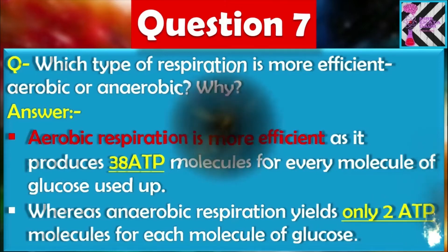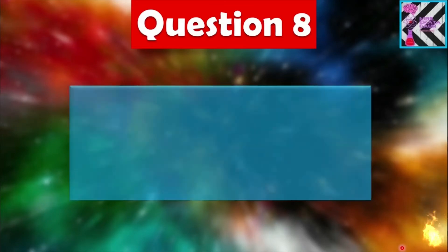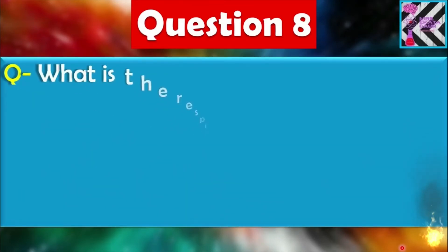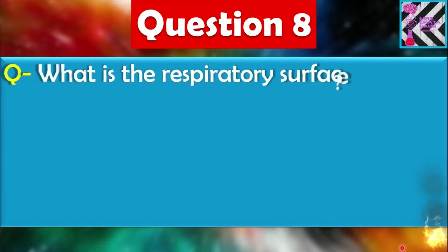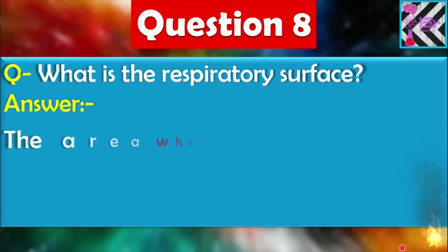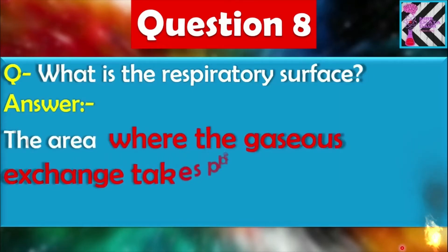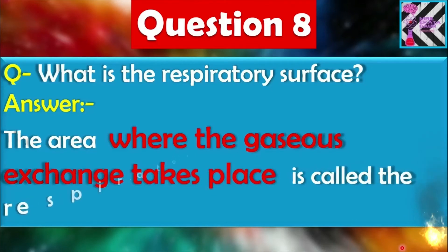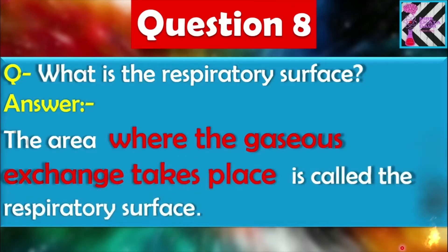Question number eight: What is the respiratory surface? The area where gaseous exchange takes place is called the respiratory surface. All areas where gaseous exchange can easily occur are called the respiratory surface.